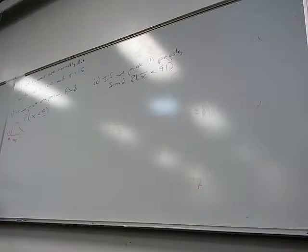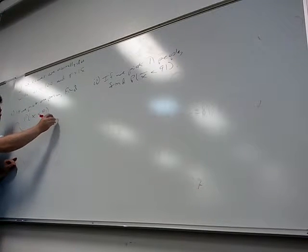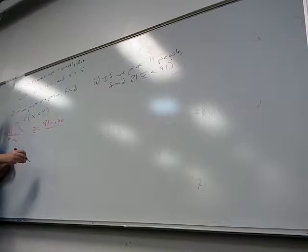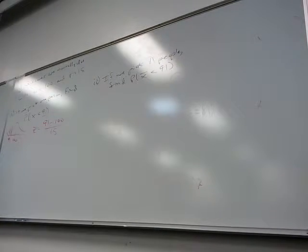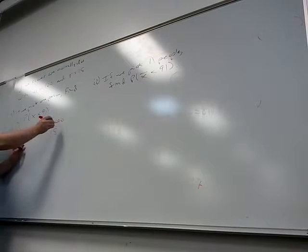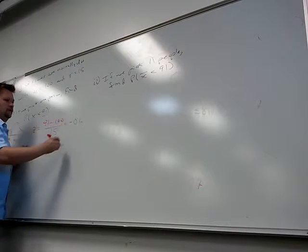Of course I can't look up 91 in the z-score chart. I need a z-score. So how do you change that into a z-score? I like it. So 91 minus 100 over something. Over 15.